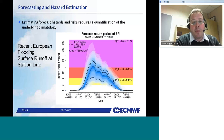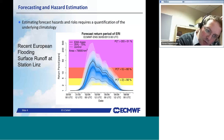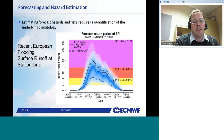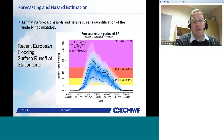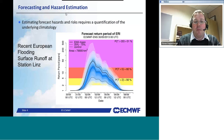Another way of defining extremes is in terms of return periods, which are also related to an underlying climate. Here's a plot from the Extreme Runoff Index from Lorenzo Alcieri for recent European flooding — surface runoff at station limits. The Y-axis shows return period from one year up to 500. You've got ensemble forecasts and three different boiling levels in the upstream area. This gives a feeling of how extreme that discharge is — a large number of ensemble members indicated a return period of more than 20 years.